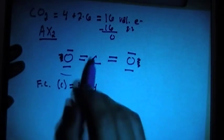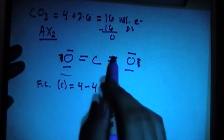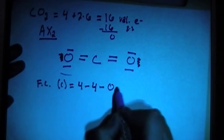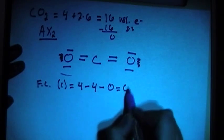They count as 1, 2, 2 for each. So there's 1, 2, 3, 4 bonds, minus the number of unpaired electrons is going to be 0. That's going to give us a 0 formal charge for the carbon.